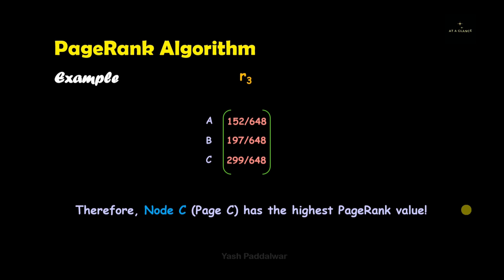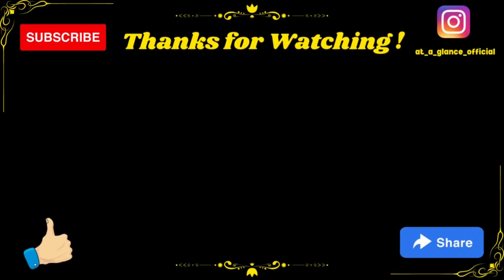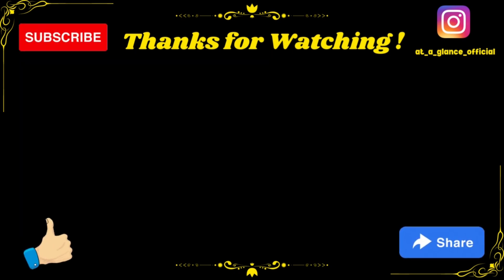According to a particular query fired by any user on the internet, web page c will be displayed at the top of the results page because it has the highest relevance — and this is how Google's PageRank algorithm works. If you have any doubt in the algorithm or the example, put it in the comment section. Don't forget to subscribe to the channel, hit like, share it with your friends, hit the bell icon, and follow me on Instagram.